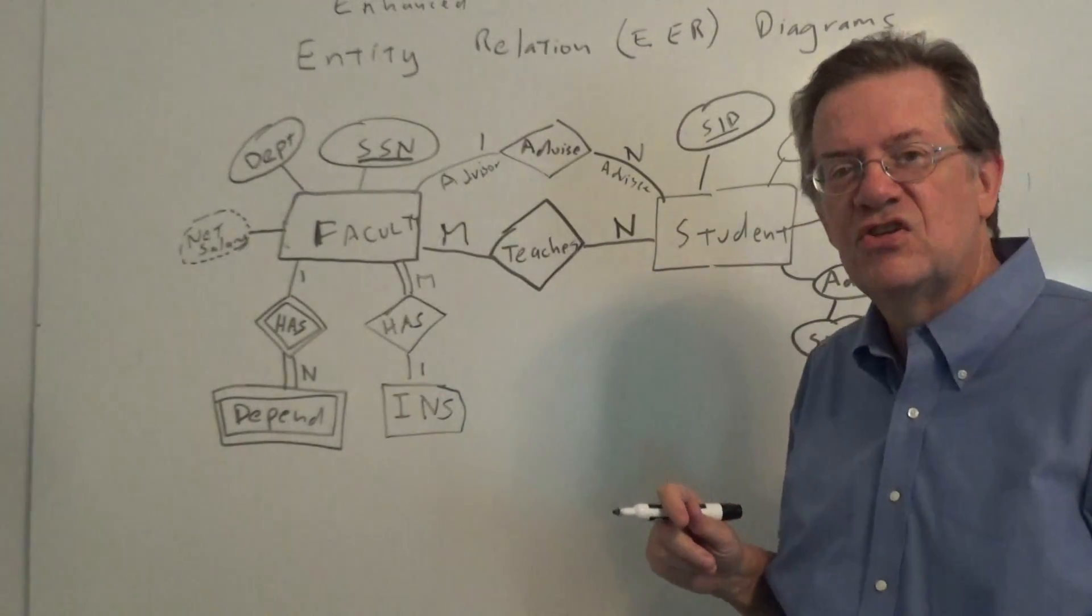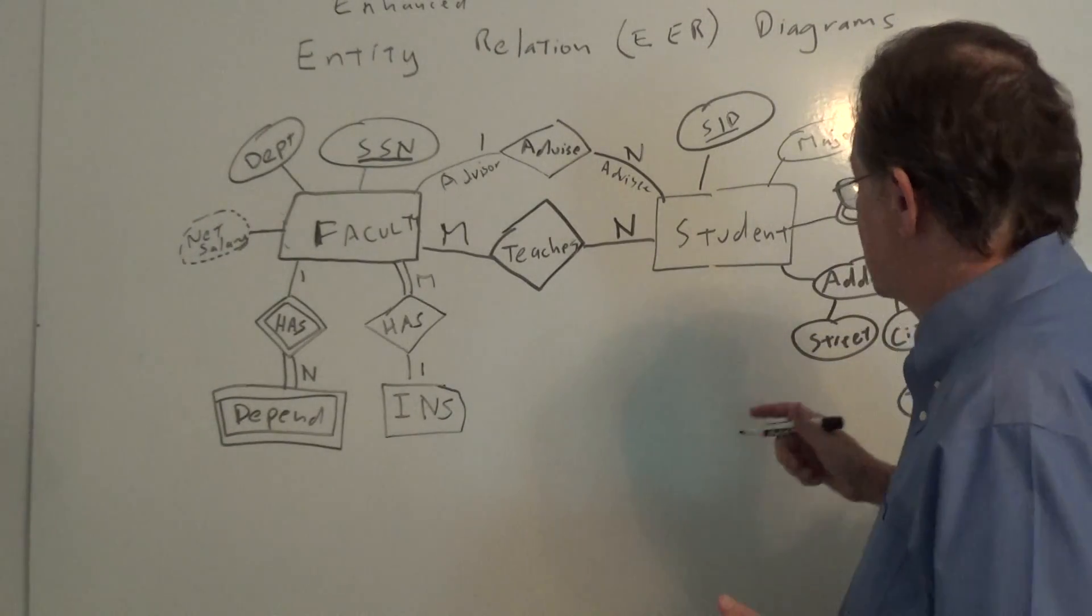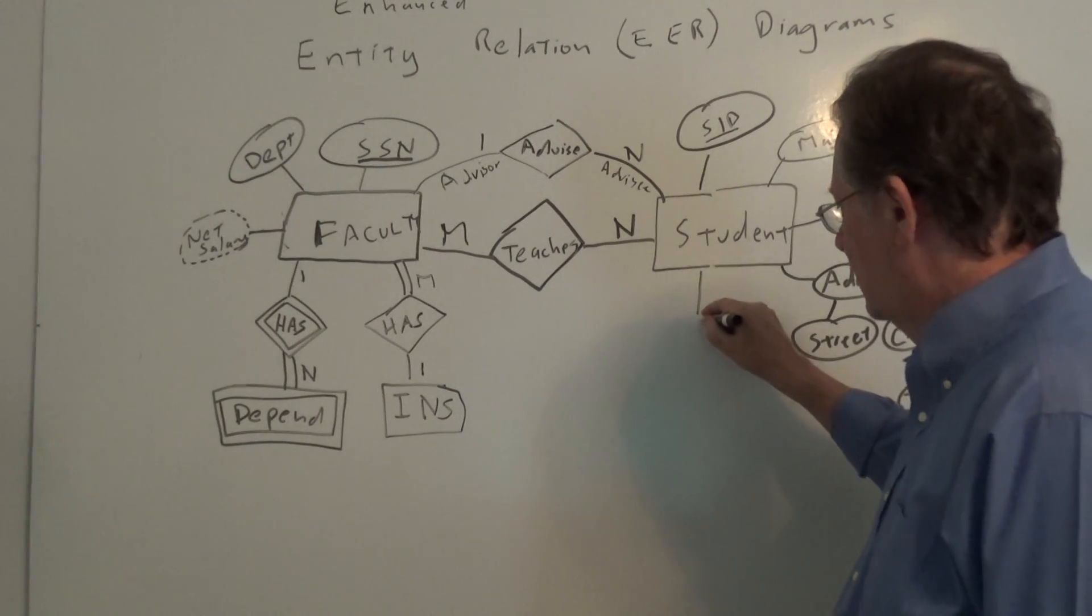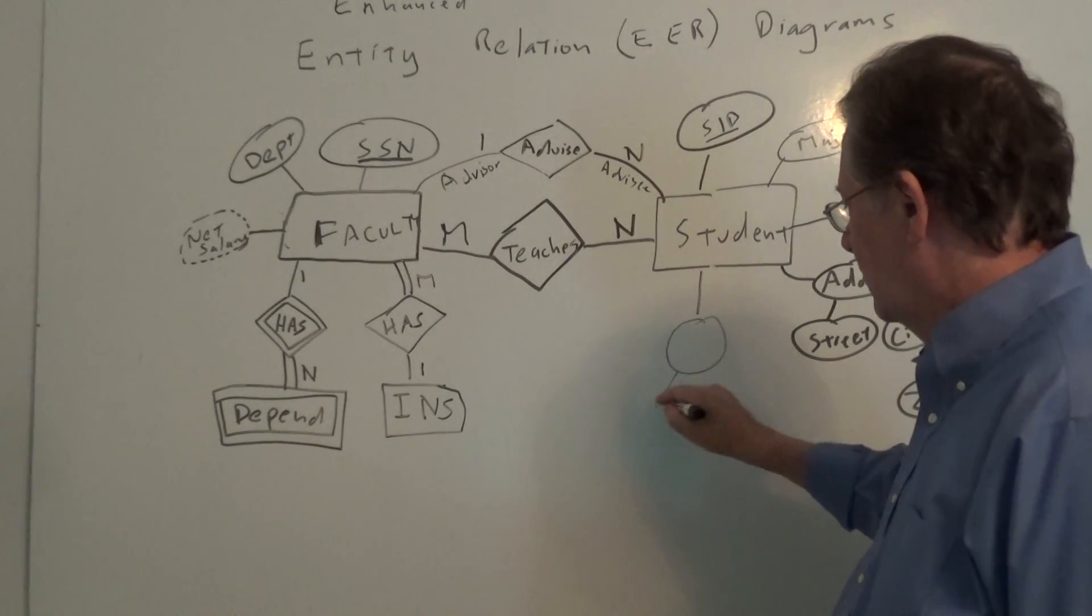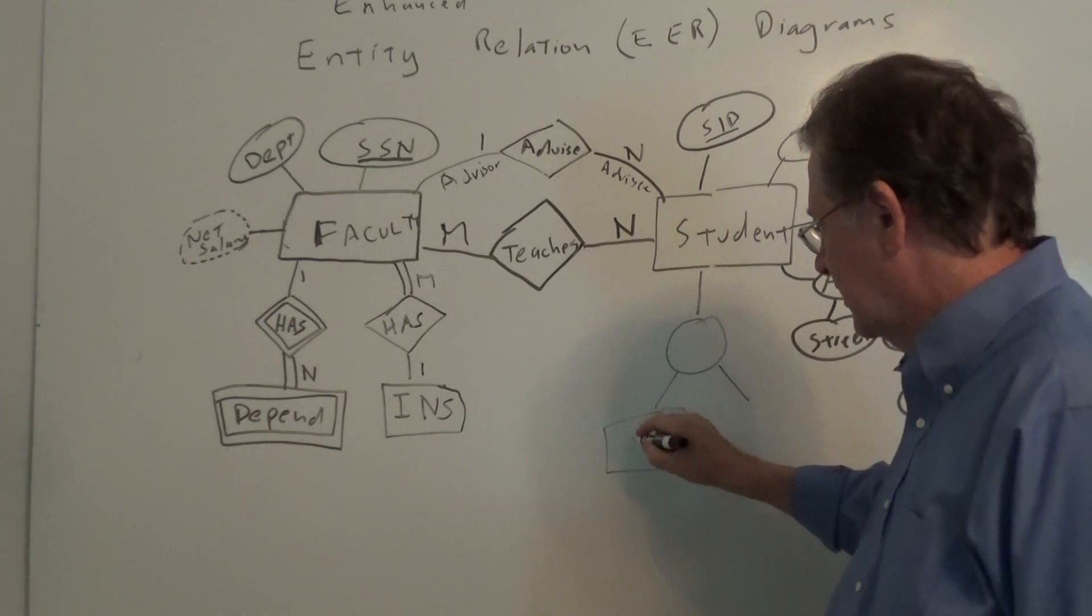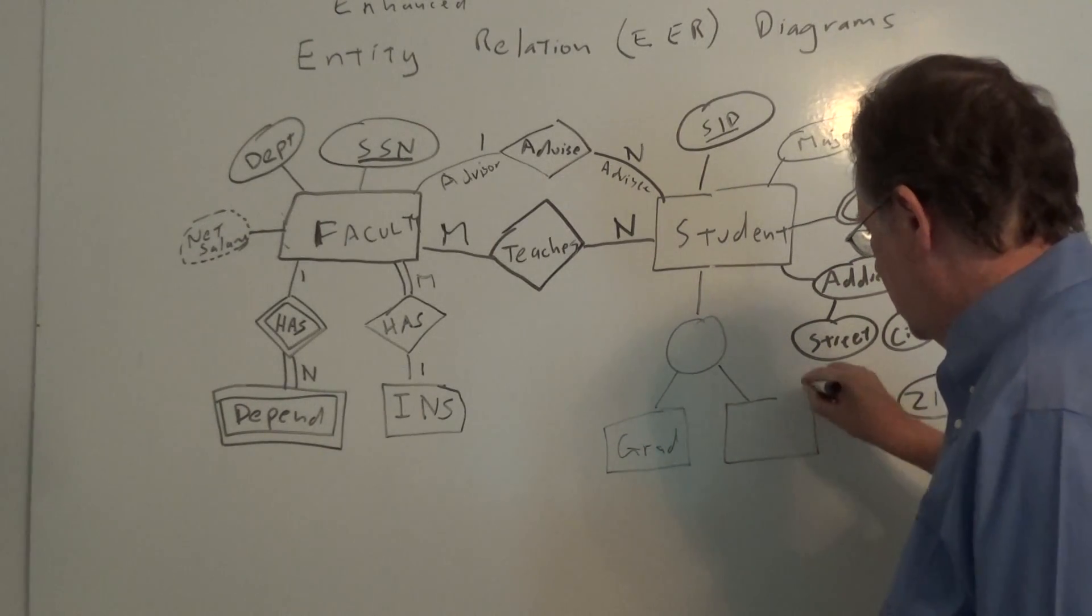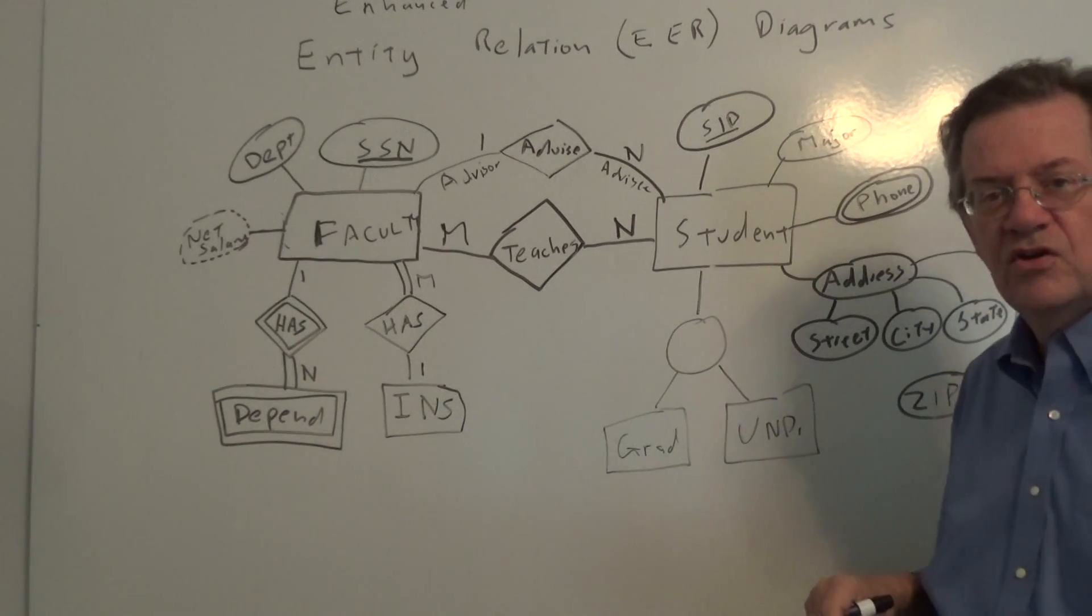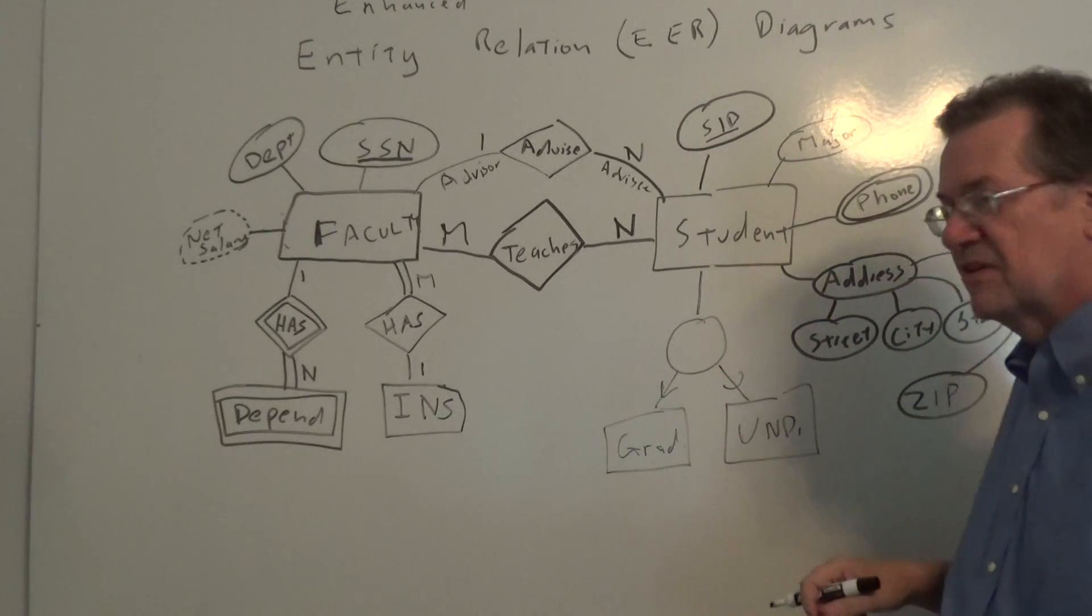So let's say, for example, a student might be either a graduate student or an undergraduate student. So in this particular case, we draw a student. We draw a line coming down. We draw a circle, and I'll explain what that is in a second. And we would split that off to grad and we put UND for undergrad. And typically there's these two kind of curved lines there, which means it splits off.